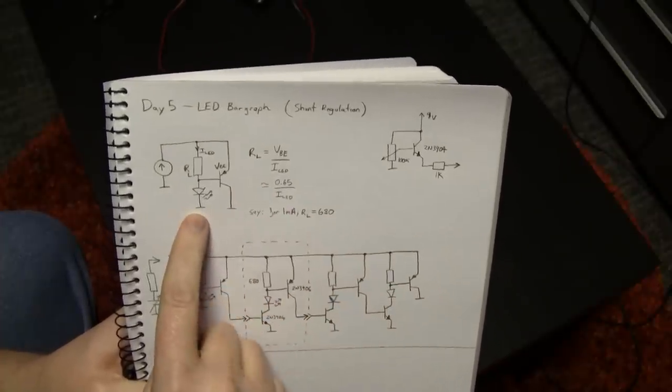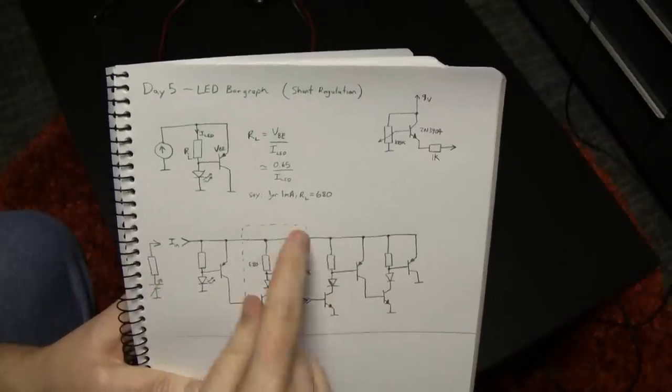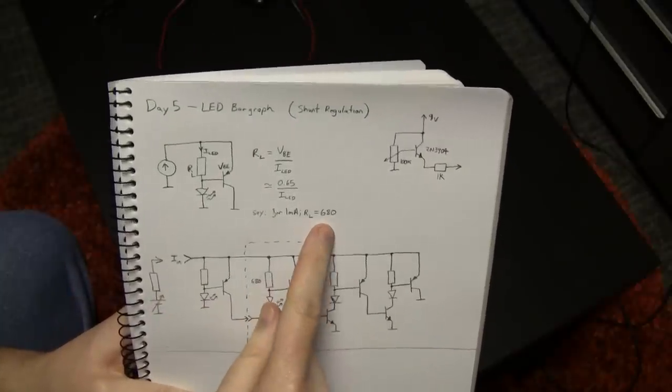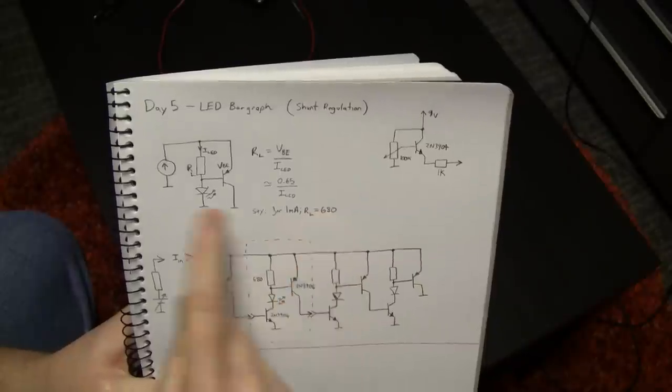In this case, I wanted 1 milliamp because these LEDs I'm going to show you in a minute are reasonably efficient. So we get about 680 ohms, which is the nearest E12 preferred value for that resistor.